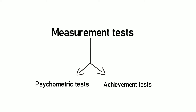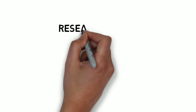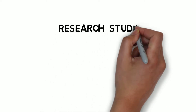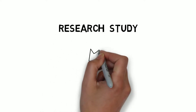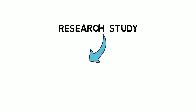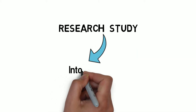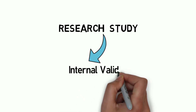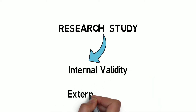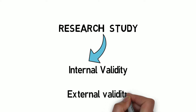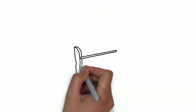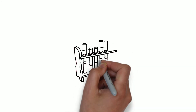Another context where the term validity is very often used is in experimental studies. There are two terms used: internal validity and external validity. These two terms are used in the context of an experimental study and show how effective the findings of the studies are. Let's first talk about internal validity.